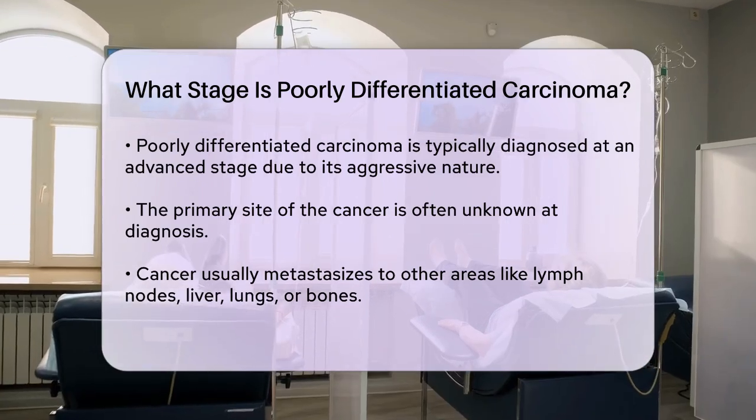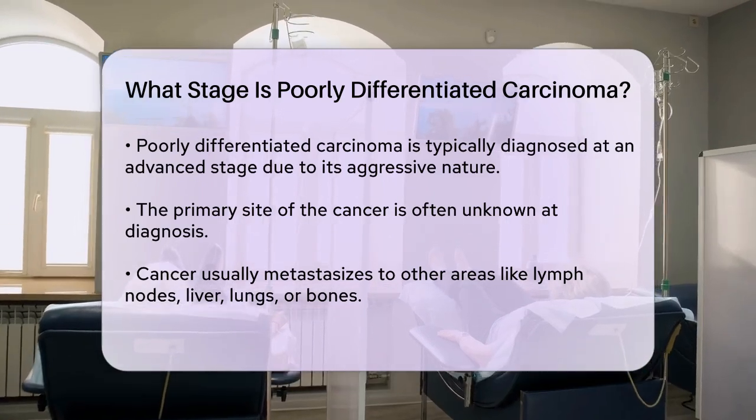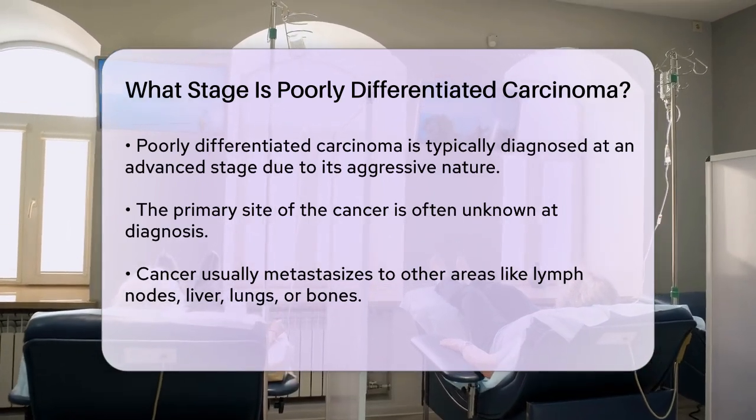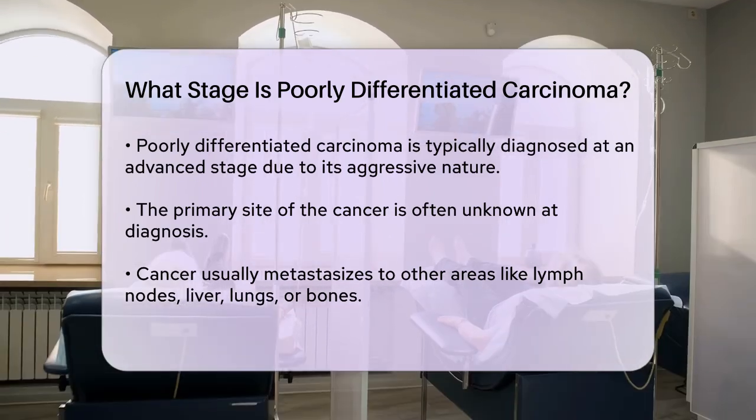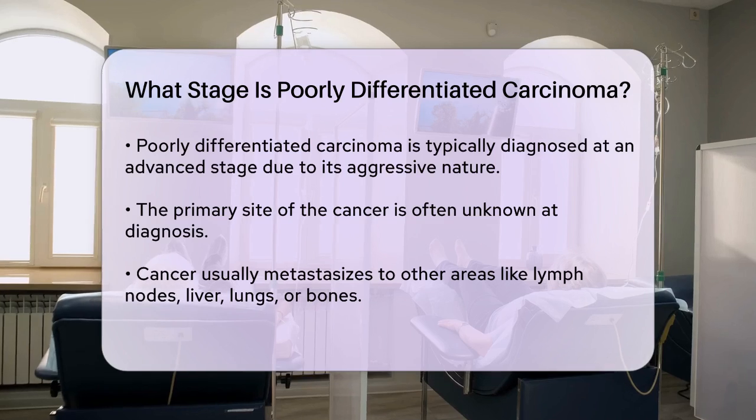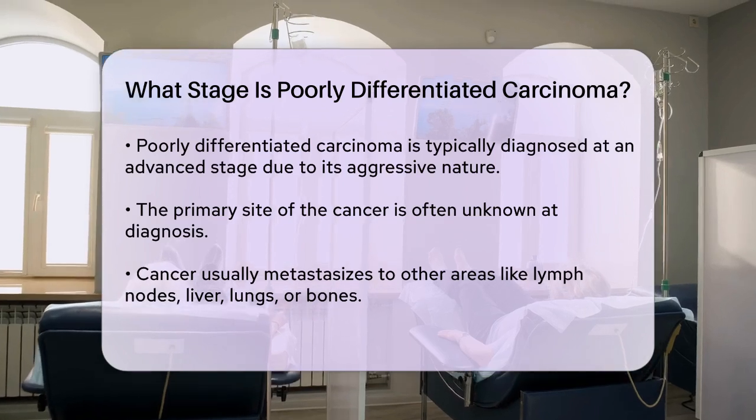The staging of cancer generally involves determining the extent of the cancer's spread, but for cancers of unknown primary (CUP), including poorly differentiated carcinoma, the staging can be more complex.